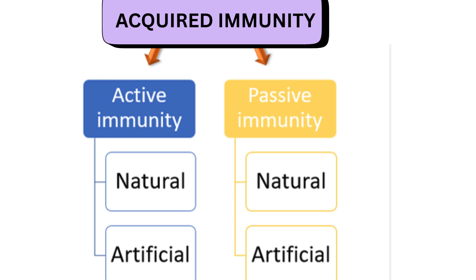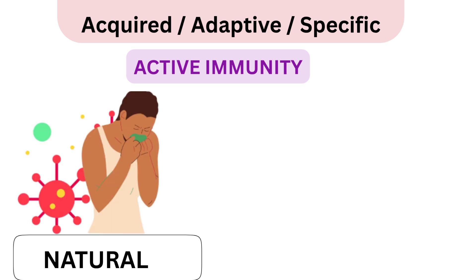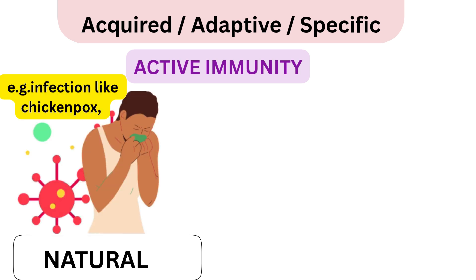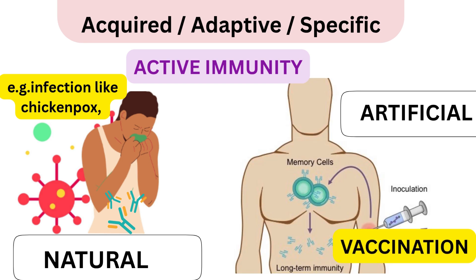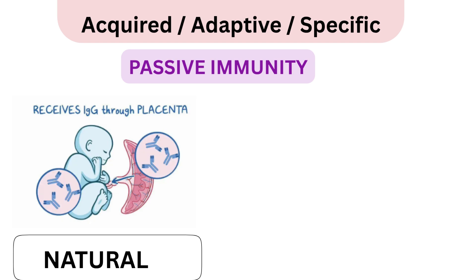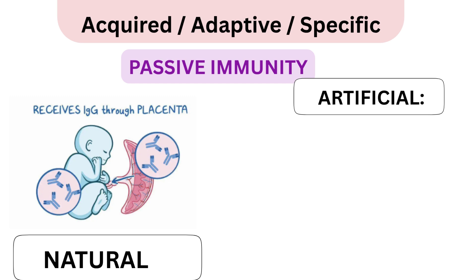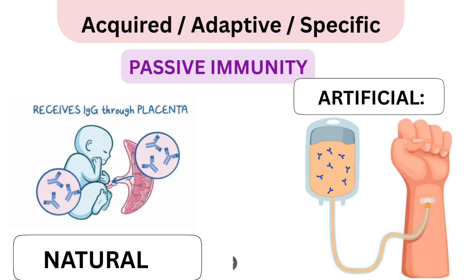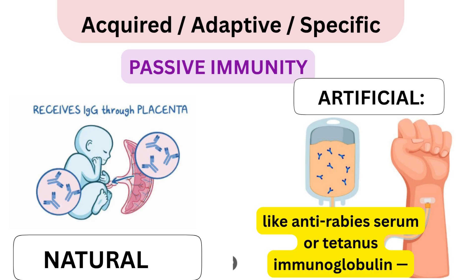Natural active immunity: after an actual infection like chickenpox, our body naturally forms antibodies. Artificial active immunity: after vaccination like tetanus or hepatitis B, our body makes antibodies against the vaccine antigen. Natural passive immunity: a mother gives antibodies to her baby through the placenta or breast milk. Artificial passive immunity: ready-made antibodies are given through injections like anti-rabies serum or tetanus immunoglobulin.